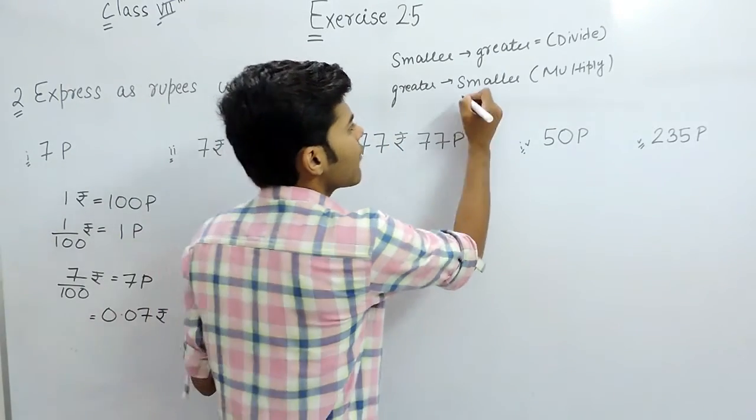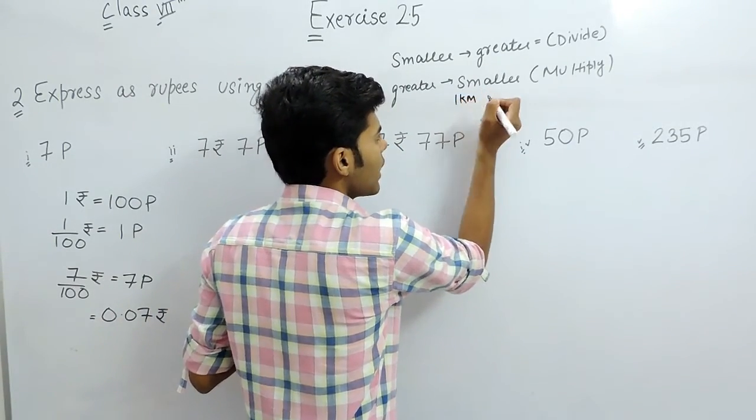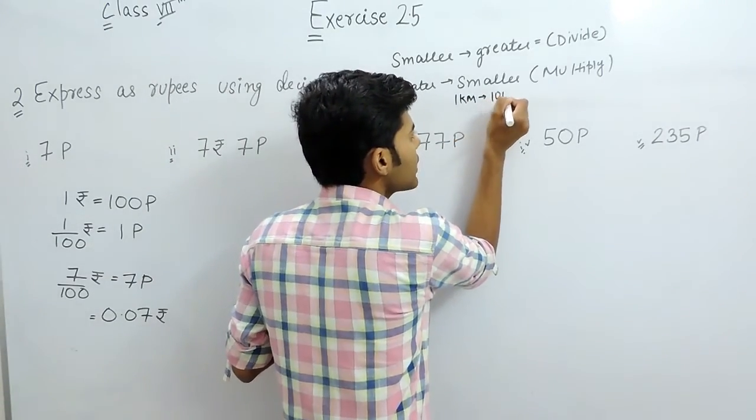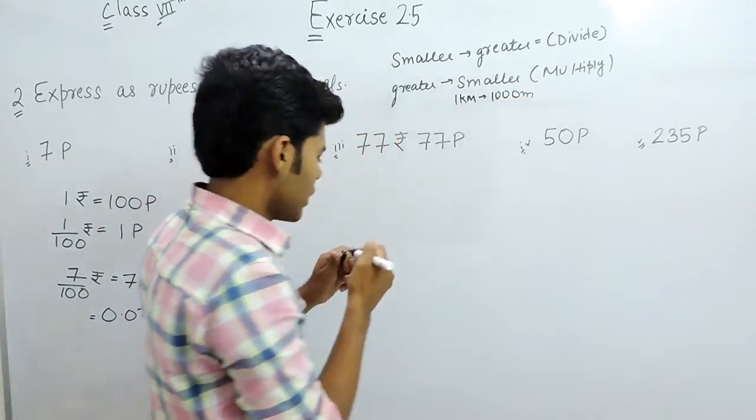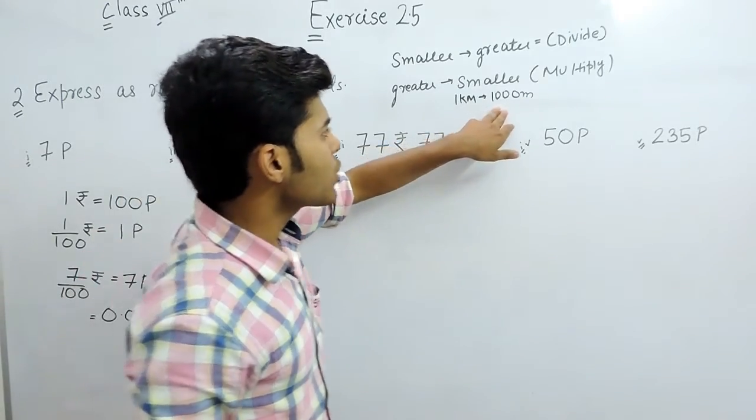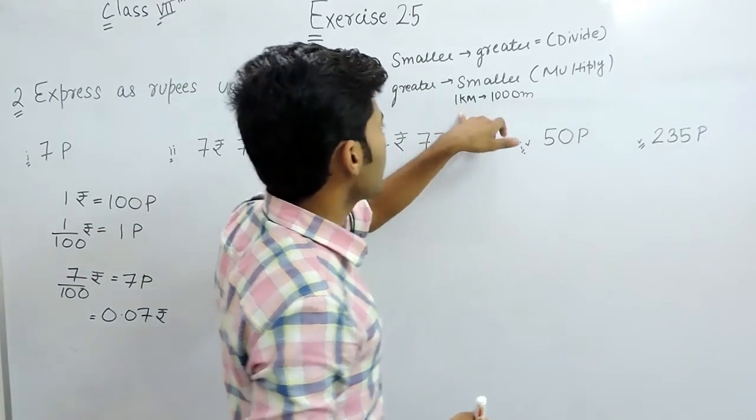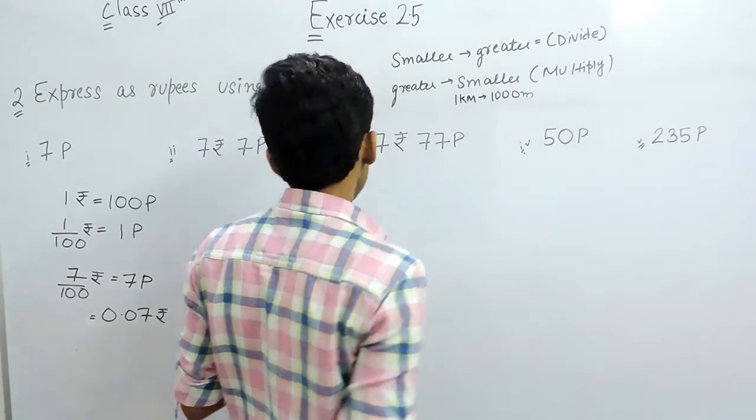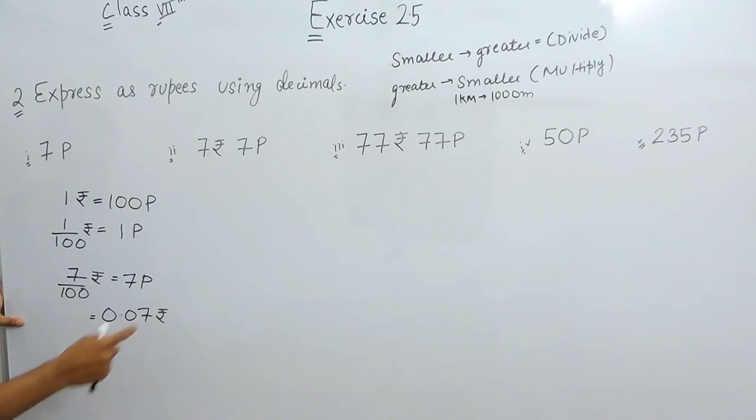Supposingly, if we are having 1 km and we have to convert it in meters, that will be 1000 meters. Here we have multiplied 1 with 1000 and that's why it has given us 1000 meters. Here also we will follow the same thing.